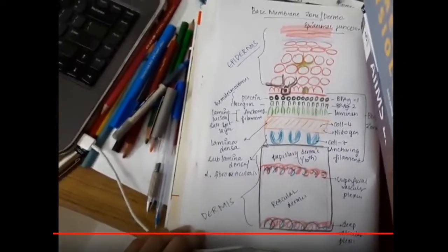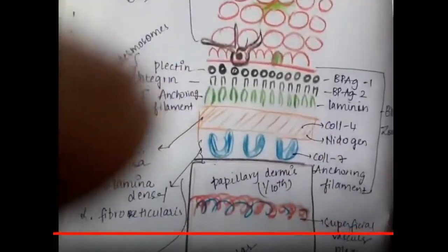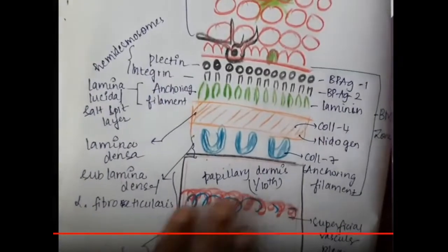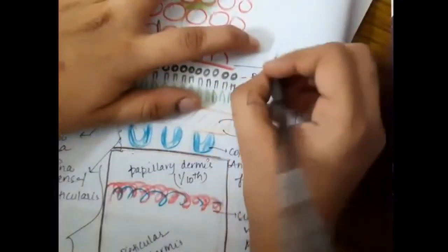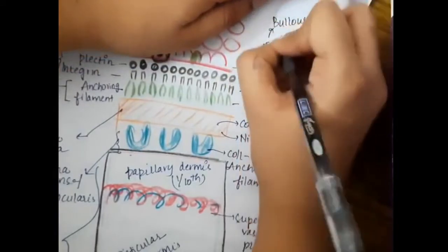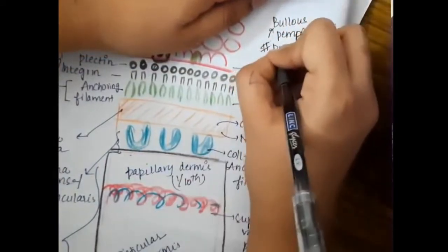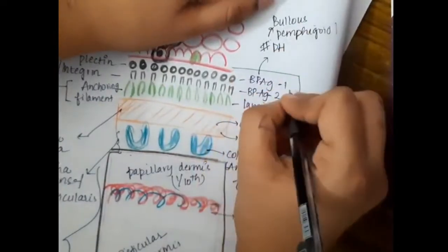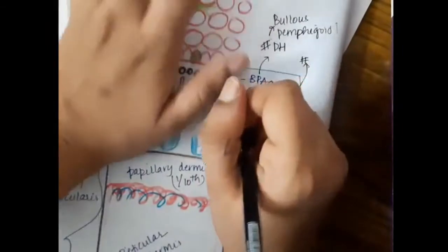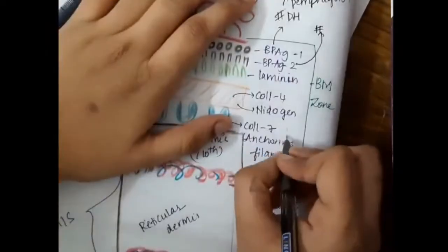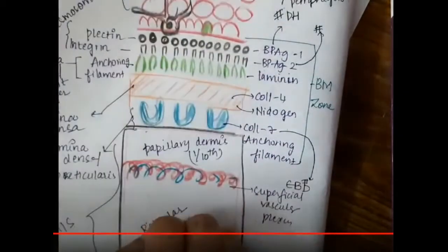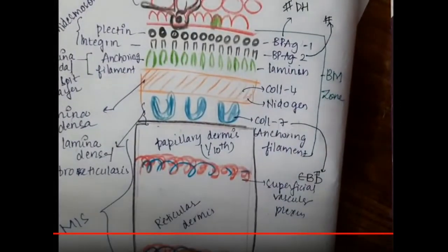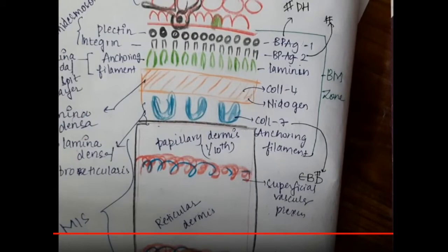Now we have learned about this zone, and we should note the defects. If there is a plectin — that is BPAG1 — defect, this is seen in bullous pemphigoid or dermatitis herpetiformis. A BPAG2 defect can also result in these disorders. Collagen 7 defect specifically is seen in epidermolysis bullosa dystrophica. These are the important clinical points about the basement membrane zone.